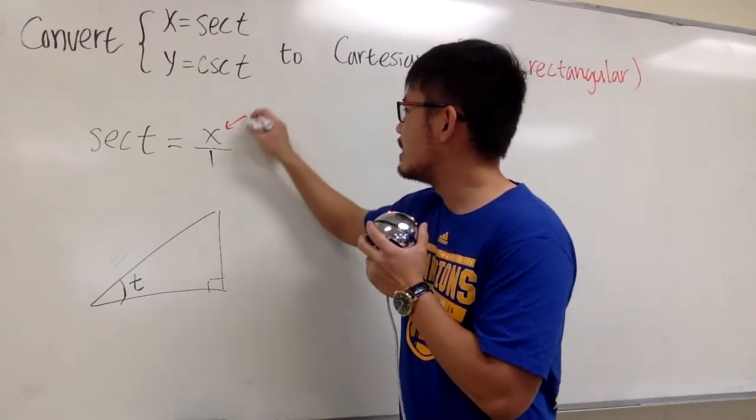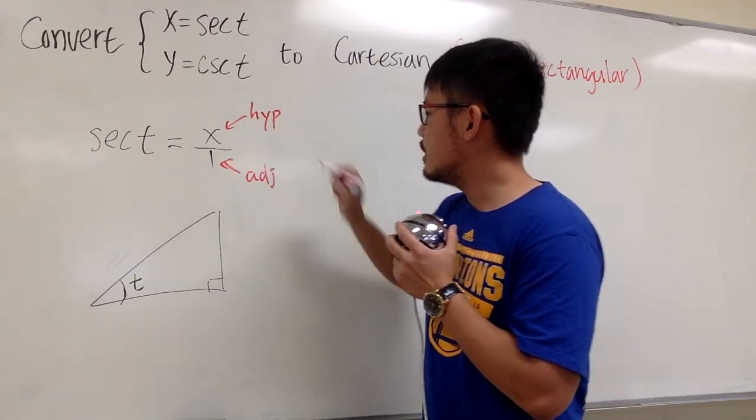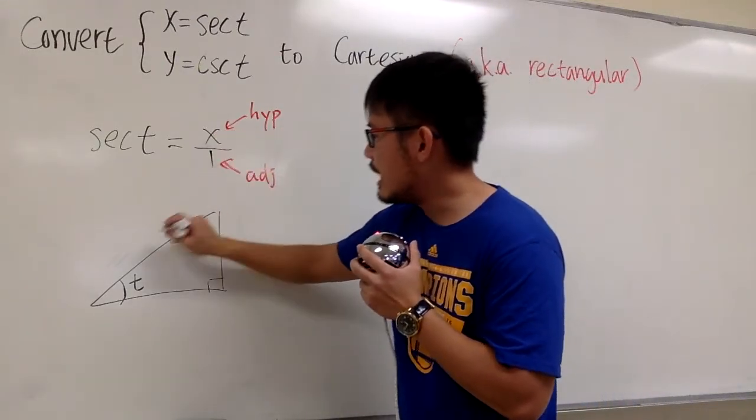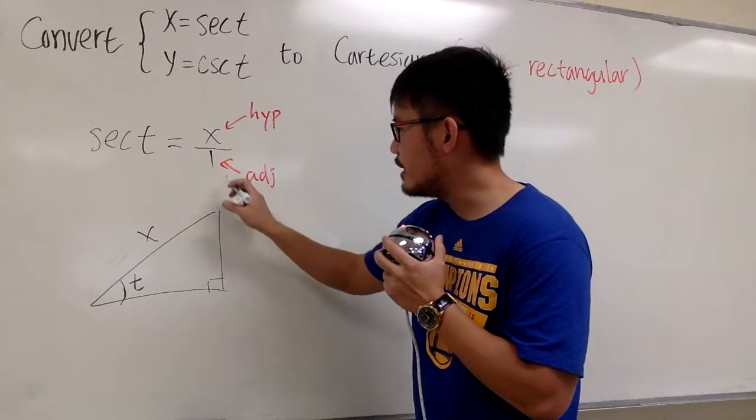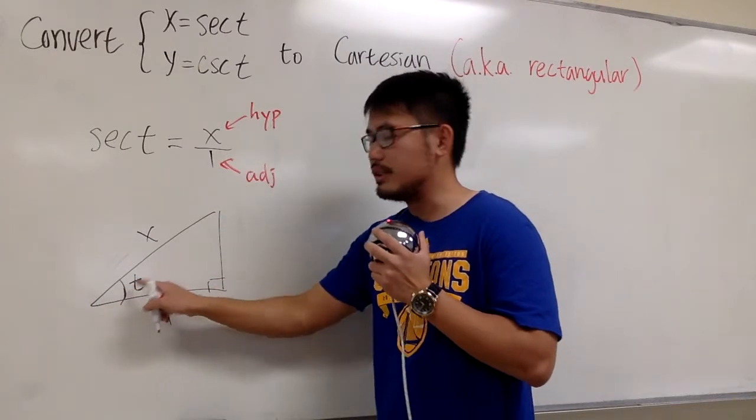Secant means hypotenuse over adjacent. So I'm going to indicate the hypotenuse is x, which is right here, and then the adjacent, which is 1, is right here, because I chose the angle to be right there.